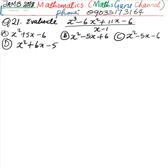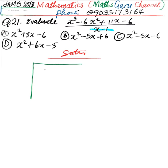Question number 21. Evaluate x cubed minus 6x squared plus 11x minus 6 over x minus 1. This is simply a division of polynomial problem. We have the dividend x cubed minus 6x squared plus 11x minus 6, and our divisor is x minus 1.